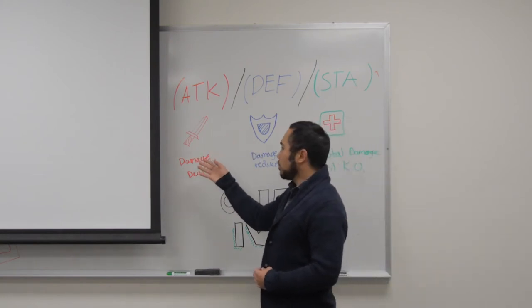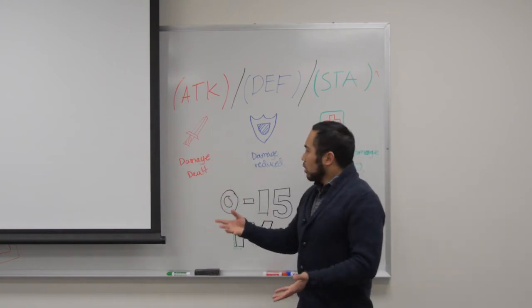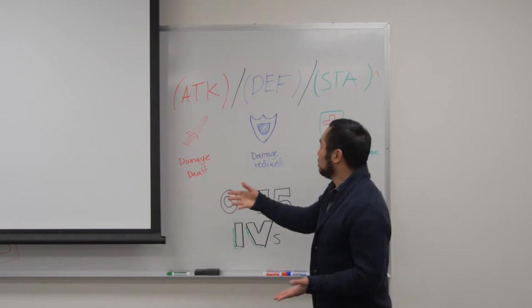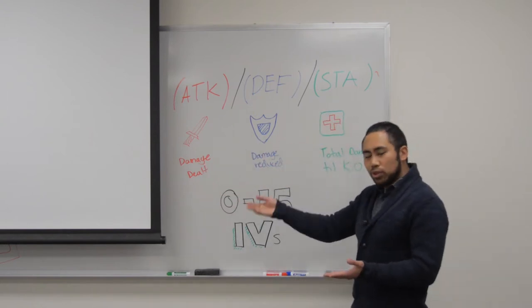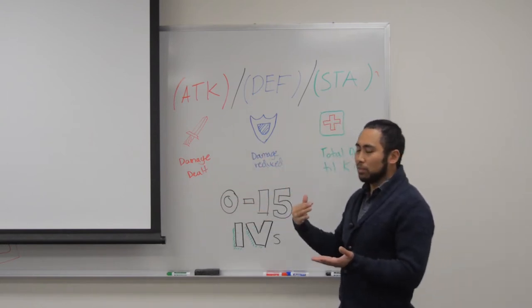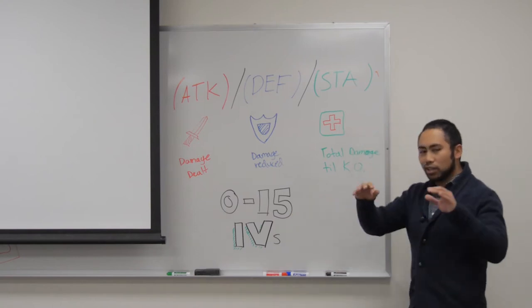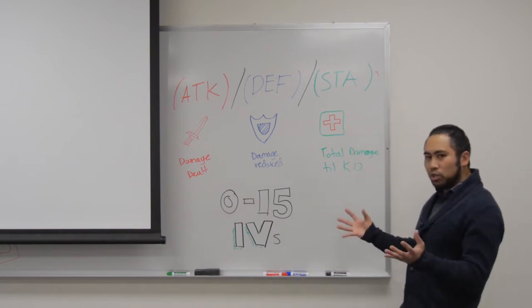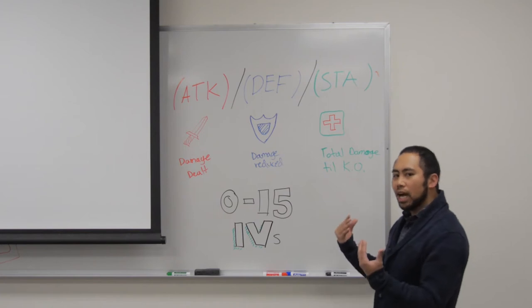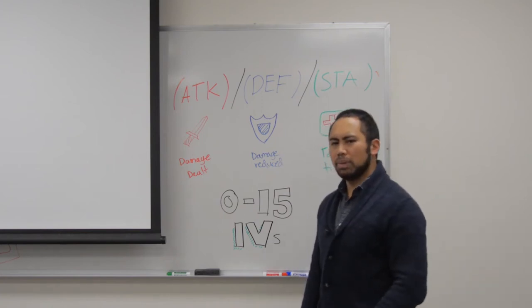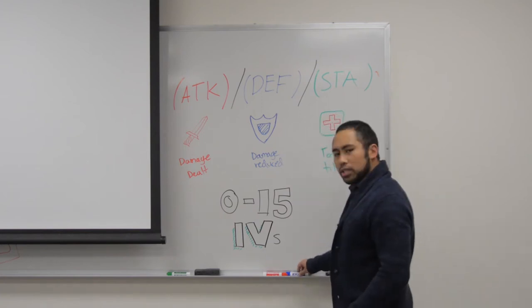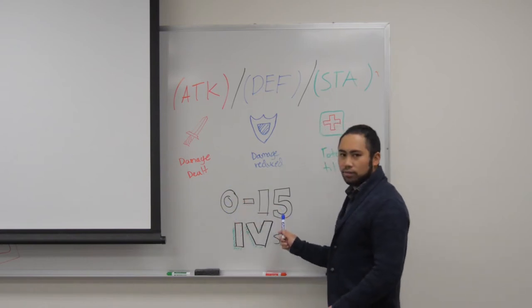What Attack does for your Pokemon is it affects the damage you deal to an opposing Pokemon. Defense reduces the damage you receive from an attacking Pokemon. And Stamina is like the well you have of the total damage you can get before you get knocked out. And these IVs pop in from a value of 0 to 15.